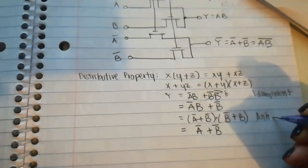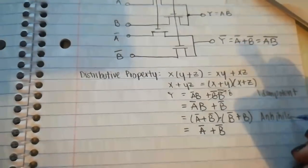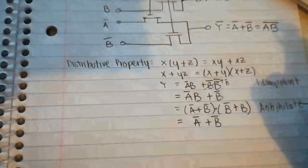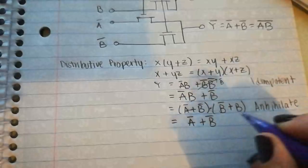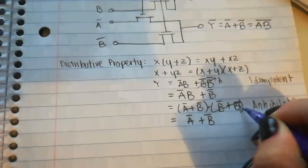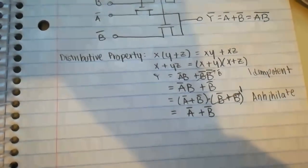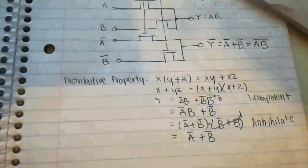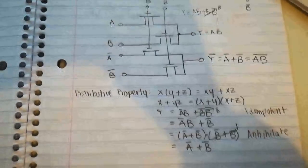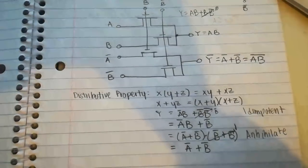Thanks to this property right here, which is in your cheat sheet, this goes away to one. Okay, and that's it for pass transistors for now. I will be making another video to go into conversions.